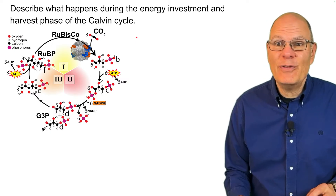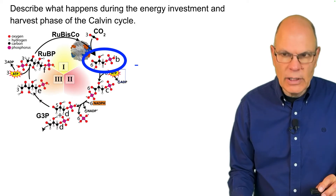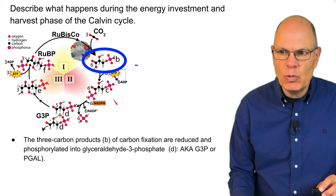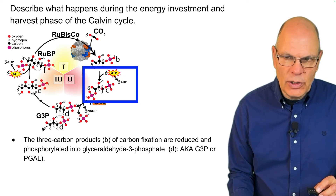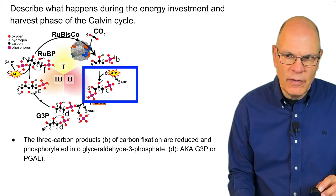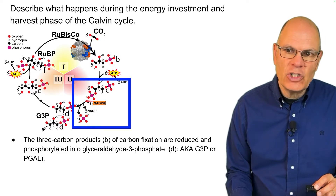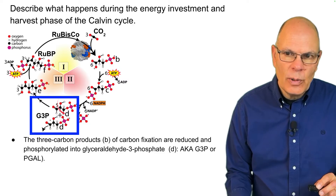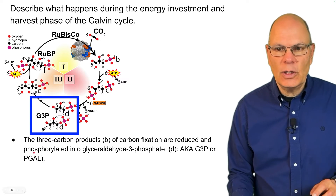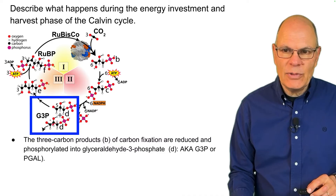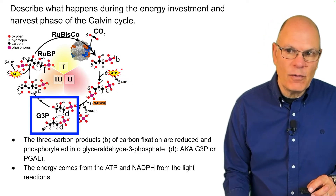We ended the carbon fixation phase with a three-carbon molecule, and that three-carbon product is then reduced and phosphorylated. ATP contributes a phosphate to this molecule — it had one phosphate group and now has two. That's the phosphorylation. Then NADPH donates an electron to this molecule — that's the reduction. At the end, we have the molecule G3P, glyceraldehyde-3-phosphate, also called PGAL, phosphoglyceraldehyde. These names are interchangeable. This molecule has a lot more energy because it was given that energy from ATP and NADPH.